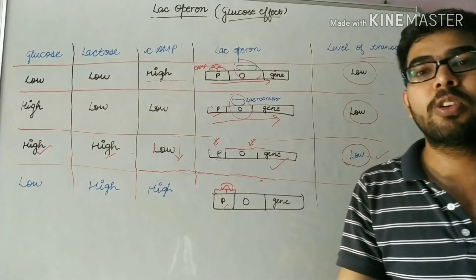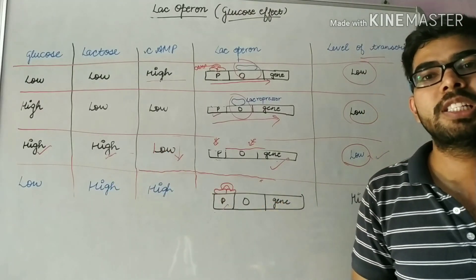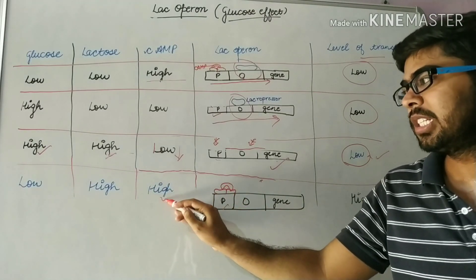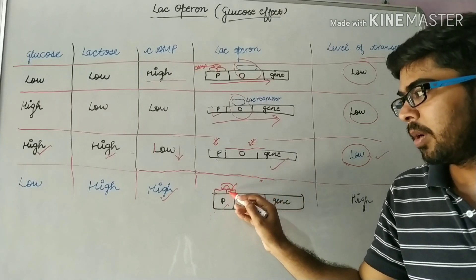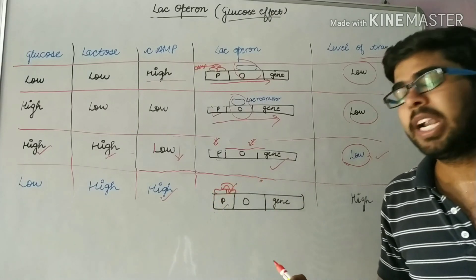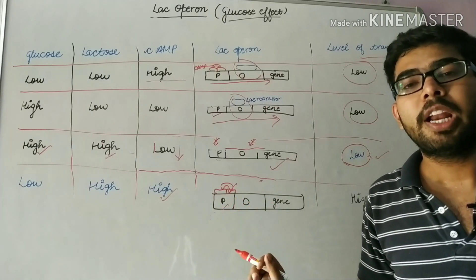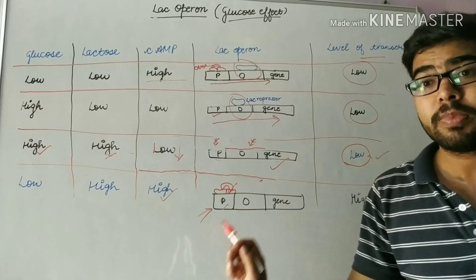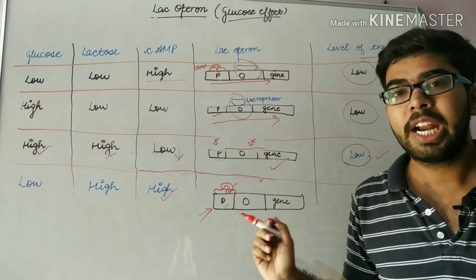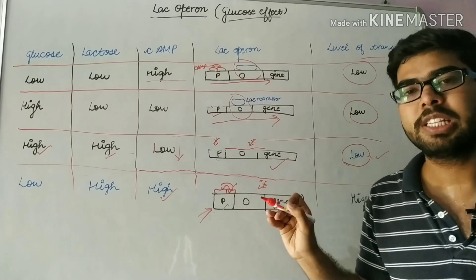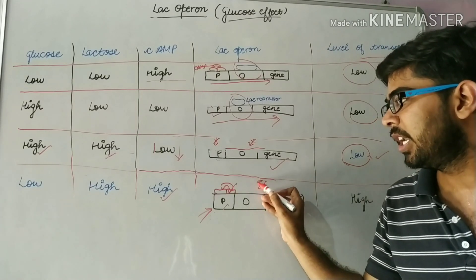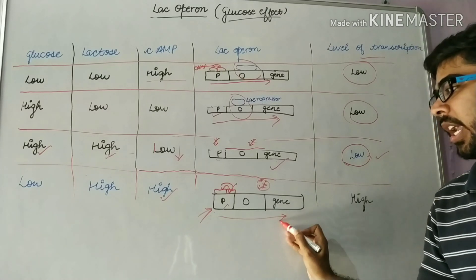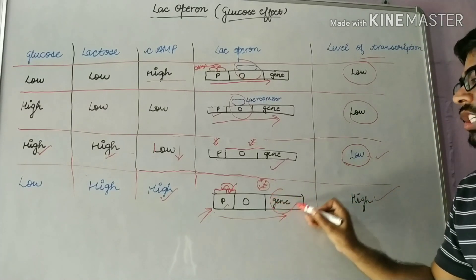The fourth case is when glucose is in low concentration and lactose is in high concentration. When glucose is in low concentration, cyclic adenosine monophosphate is found in high concentration. This cyclic adenosine monophosphate binds to the promoter region and allows proper binding of the lac operon, allowing RNA polymerase to bind to the promoter. Because of high amount of lactose, the repressor is found in inactive form and cannot bind to the operator region — as I have provided detailed information about this repressor protein in my first video. RNA polymerase will proceed further and lead to high expression of the structural genes.